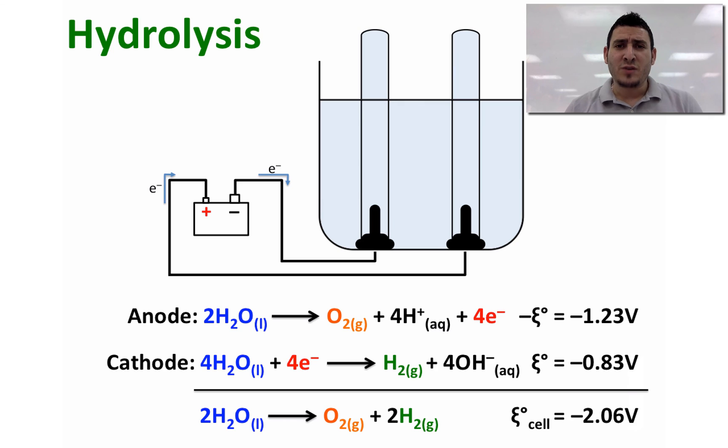As you can see from the two half equations, the cell potential of the redox reaction using water is going to be negative. When a potential greater than 2.06 volts is applied to water containing enough ions for a current to flow, an immediate evolution of bubbles of hydrogen and oxygen will be observed. Note that twice as much hydrogen is produced as oxygen.